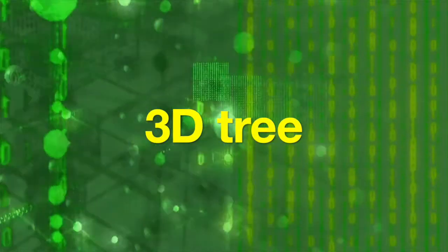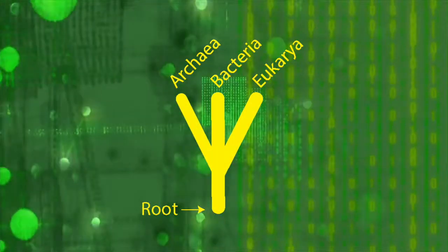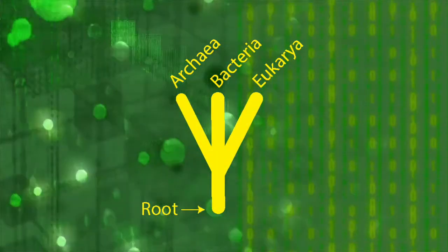The 3D tree presents Archaea, Bacteria, and Eukarya as three separate super-kingdoms. This paradigm has two popular forms.